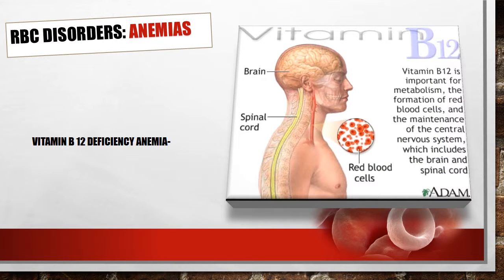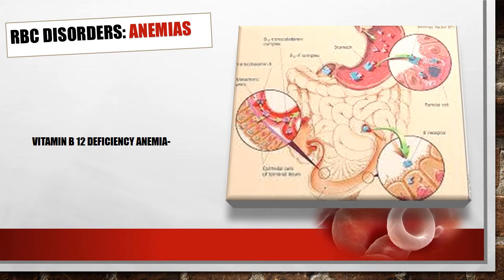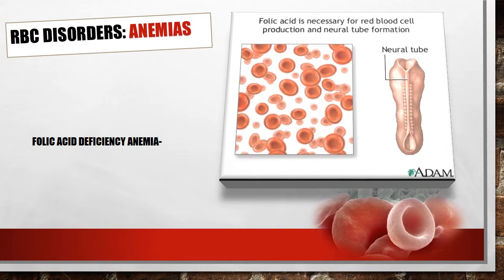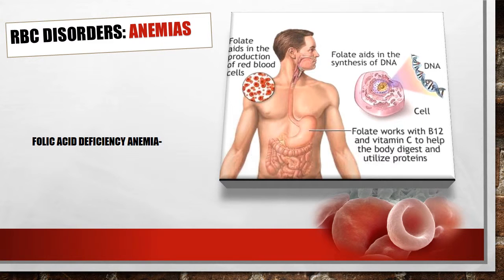Vitamin B12 is important, and vitamin B12 deficiency results from poor intake of foods containing vitamin B12 or problems such as small bowel resection, tapeworm, or overgrowth of intestinal bacteria that can lead to poor absorption of B12. Folic acid deficiency can also cause anemia. Folic acid is necessary for red blood cell production and neural tube formation. Folate aids in DNA synthesis and works with B12 and vitamin C to help the body digest and utilize proteins.